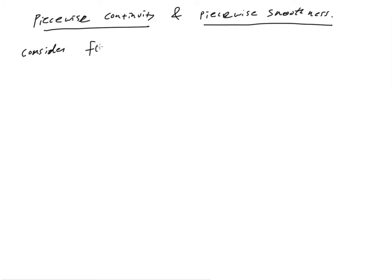So now we're going to go on to the next definition. And that's the one of piecewise continuity and piecewise smoothness.